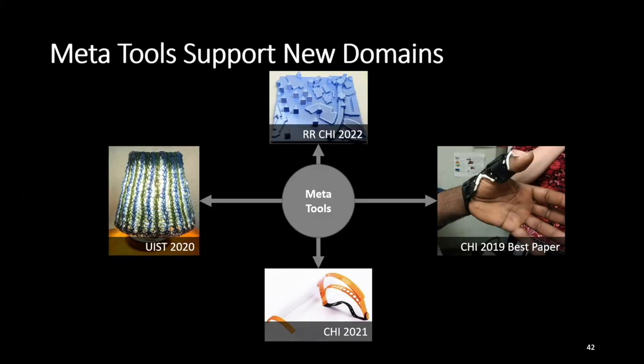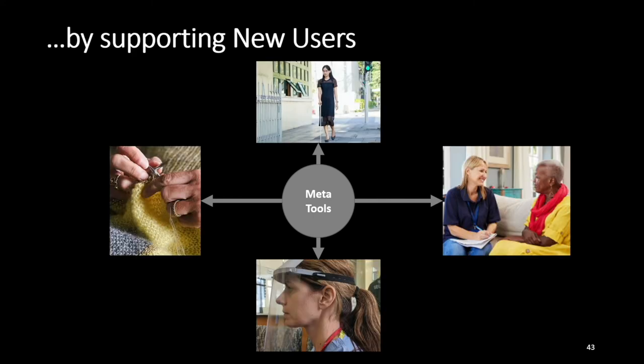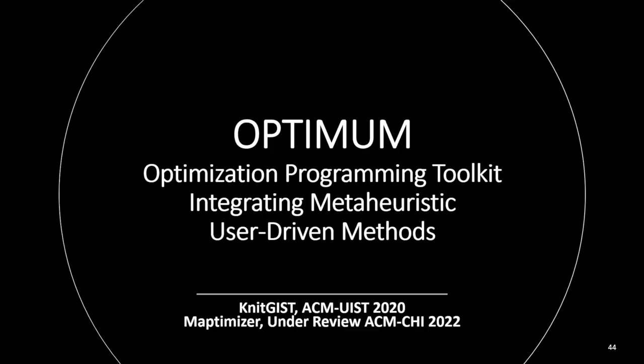Meta tools and the tools they create can support new types of domains — everything from tactile graphics to machine and hand knitting design and 3D printing PPE and splints. By extension, this means we're supporting new sets of users: people with disabilities, care and clinical workers, and craftspeople. One of the meta tools in my thesis work is called Optimum: Optimization Programming Toolkit Integrating Meta-Heuristic User-Driven Methods, and we presented the first system built with this meta tool at UIST in 2020.